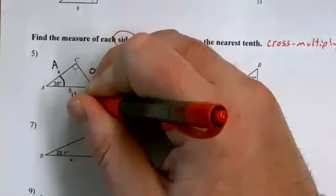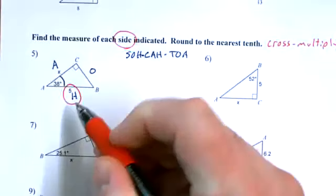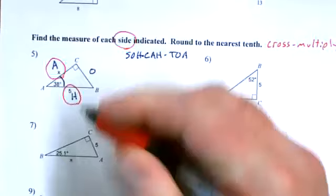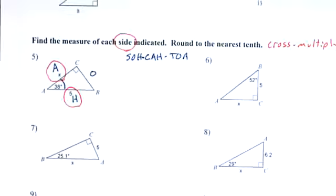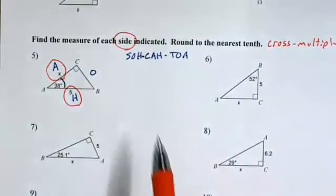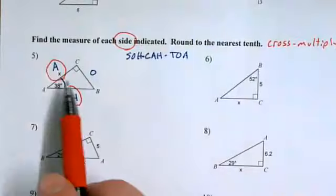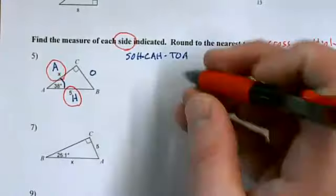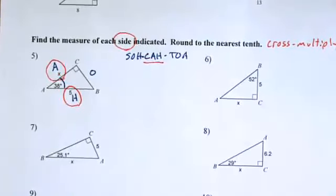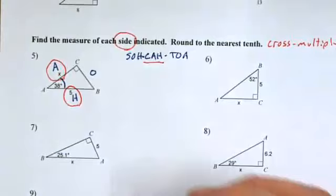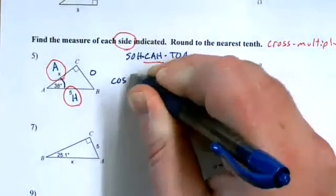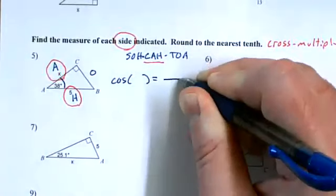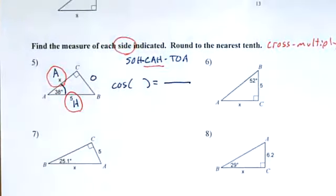SOHCAHTOA at the ready. Now, this time around, I have to pick the appropriate trig function. So I'm going to circle the hypotenuse because it has a value. And I'm going to circle the adjacent because that's what we're solving for. And I'm going to go to my SOHCAHTOA. And I'm going to ask myself which one of those has the adjacent and hypotenuse. It has to have both of them. And the only one that has both is my cosine. So for this one, I will be writing a cosine equation.